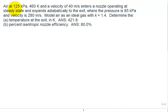We have air at a pressure of 125 kPa and a temperature of 460 kelvin and a velocity of 40 meters per second enters a nozzle operating at steady state and expands adiabatically to the exit where the pressure is 85 kPa and the velocity is 280 meters per second.